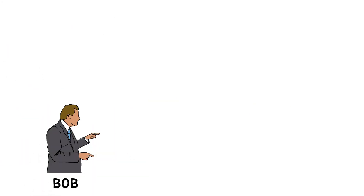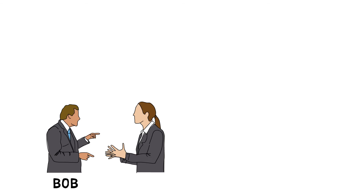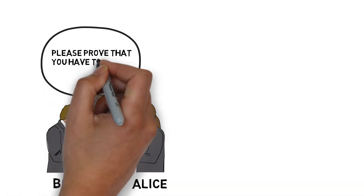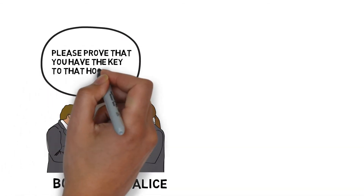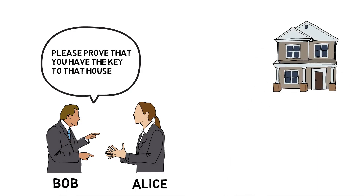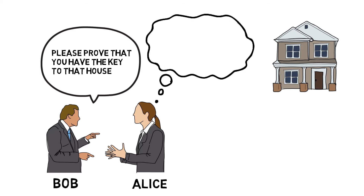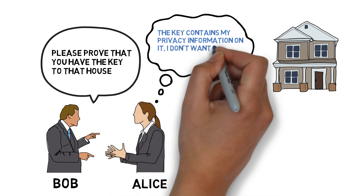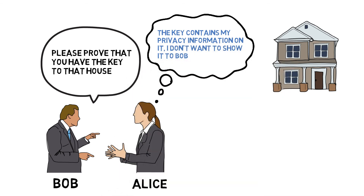Let's consider some examples about zero knowledge proof. Alice wants to prove to Bob that she has the key to a room. Of course, she can give Bob the key to open the door and thus prove that she has the key, but this will enable Bob to see the key. If Alice has other privacy information such as age or home addresses on the key, they will be released to Bob as well.